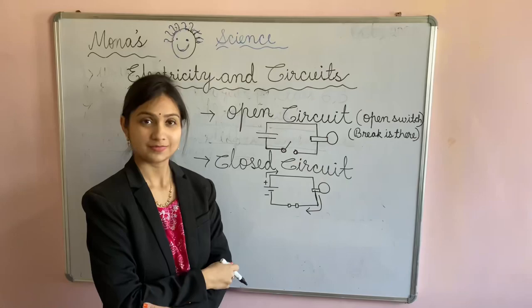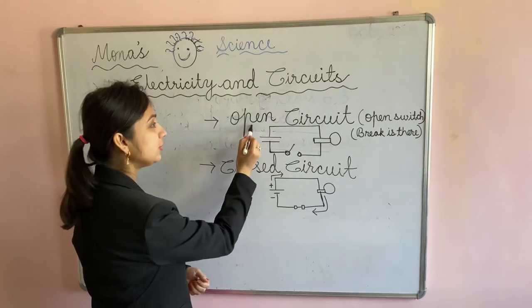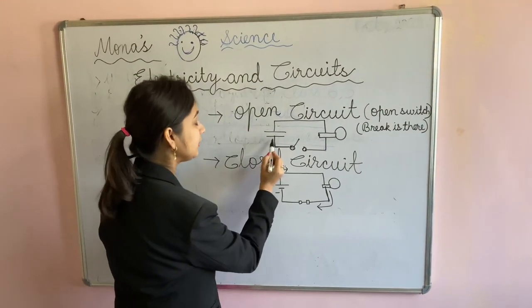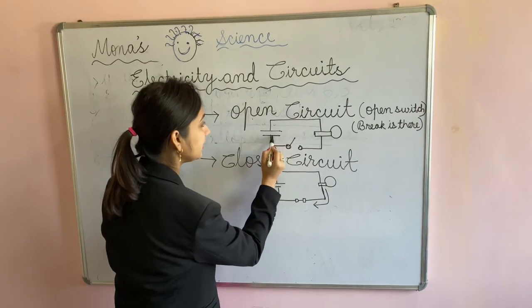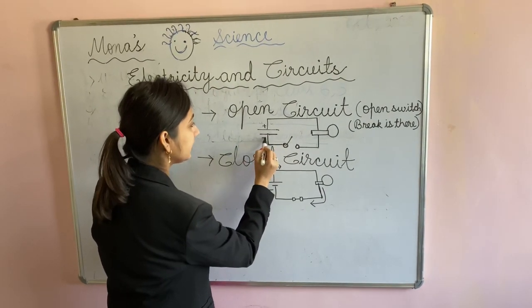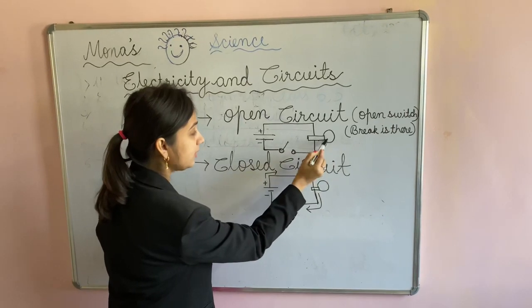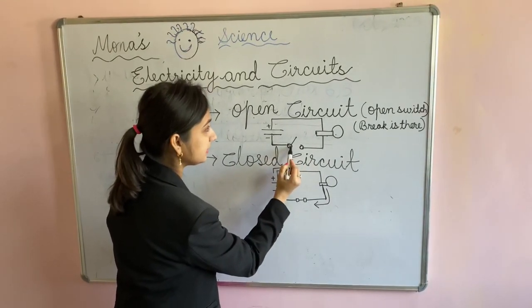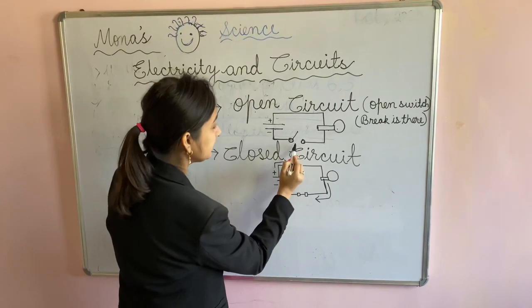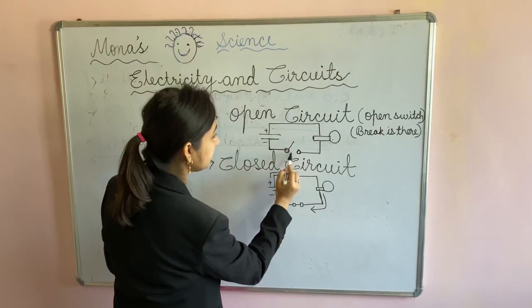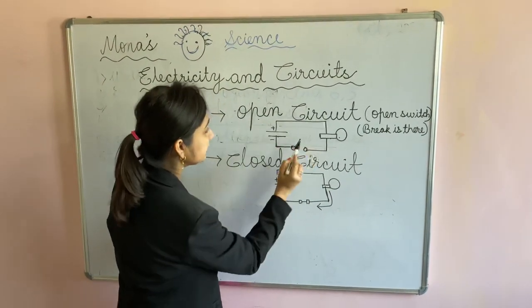Okay. So yes, in open circuit, here you can see this is battery cell. Connecting wire and this is the bulb, and here open switch is there and a break is there. So this is the open circuit.